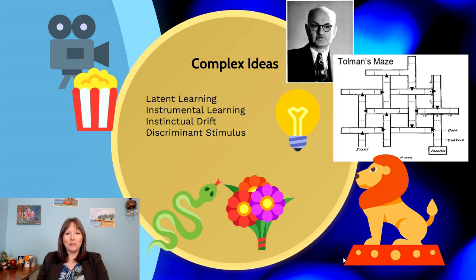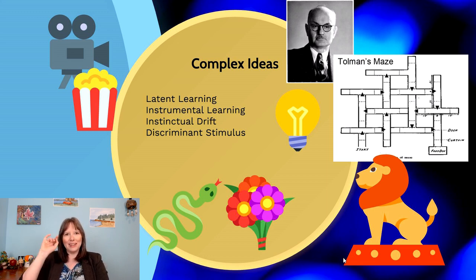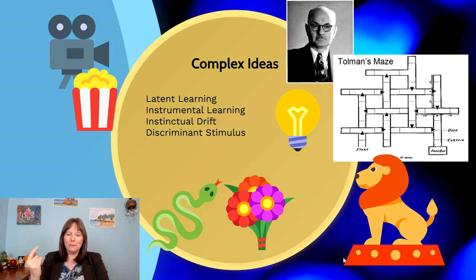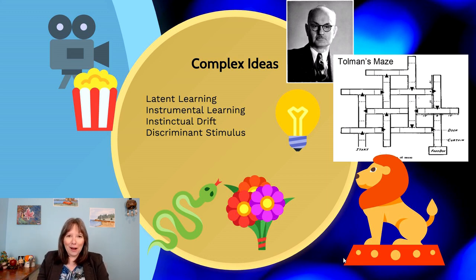Finally, we've discovered that sometimes learning only occurs in the presence of a discriminant stimulus. In the Skinner box, a rat learns to press the bar only when the green light is lit, not the red light — the green means a food pellet, the red means a shock. Similarly, Pavlov's dogs learned that the bell would only lead to food when a light was on, so they only drooled to the bell when the light was on. Behavioral psychology is far more complex than this overview covers, but it's a really fun area.